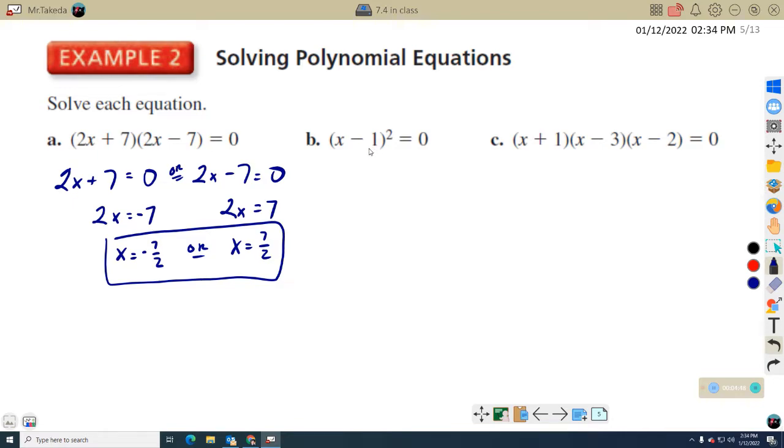This one's kind of a repeated thing, right? Cause it's X minus one and X minus one. So when we have to do it once, so X minus one equals zero. So X equals one. This is going to result, this is a factored form of a trinomial.